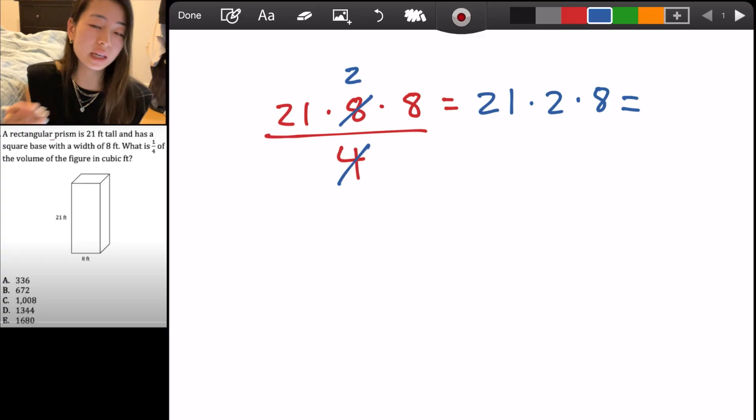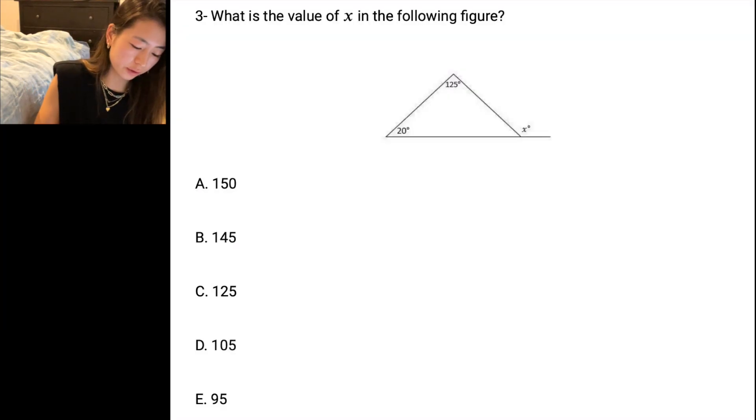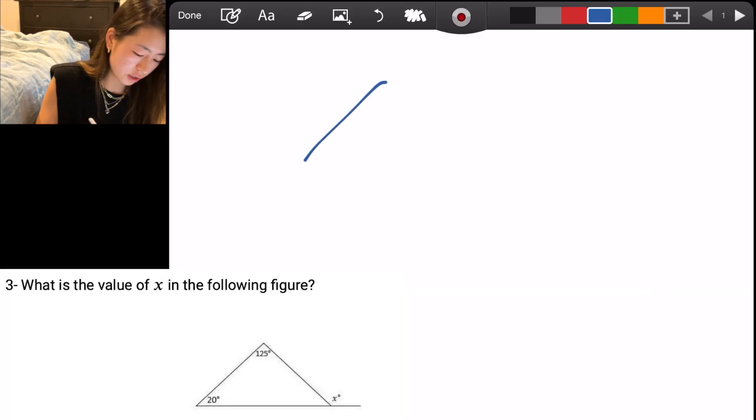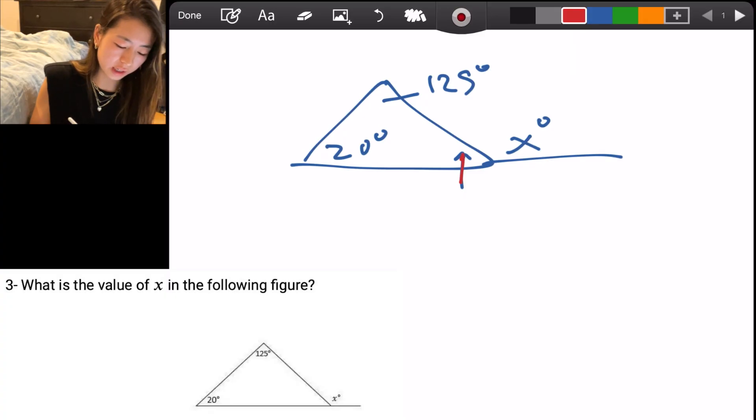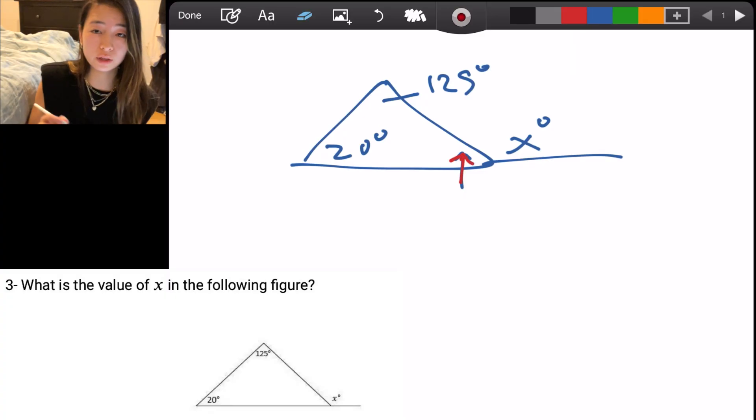Same thing for this problem. We have this triangle where we're looking for angle x and we know this is 125 degrees and 20 degrees, right? Typically students would want to find this angle because by finding this angle we can get angle x by doing 180 subtracted by this angle.